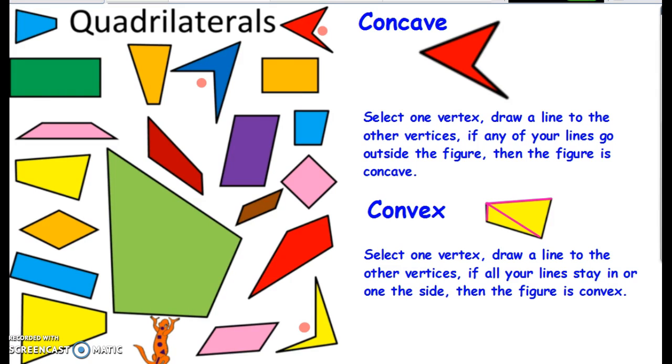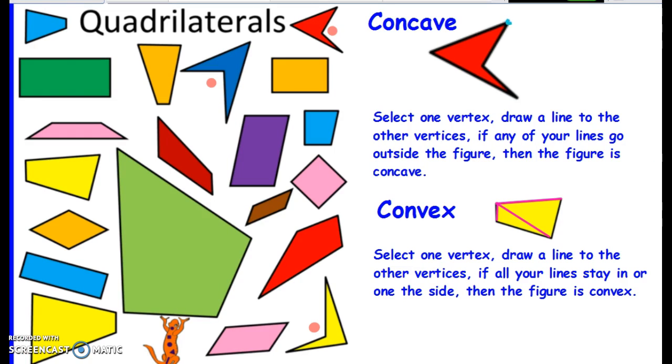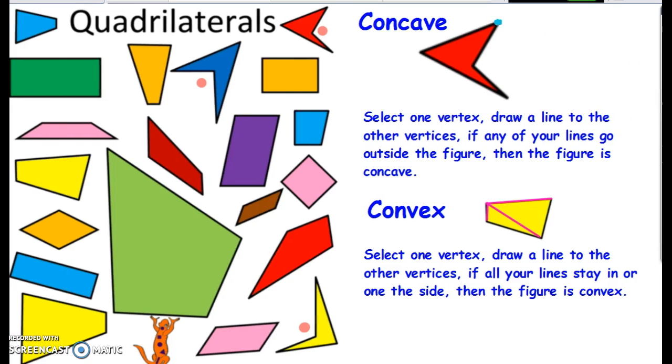And how do we determine if a quadrilateral is concave? Well, I pick a vertex. In this case I'm going to choose this one right here, and then I draw lines to all the other vertices. So there's a vertex, from this vertex to this vertex, and the minute I go outside the quadrilateral it is no longer a normal quadrilateral.